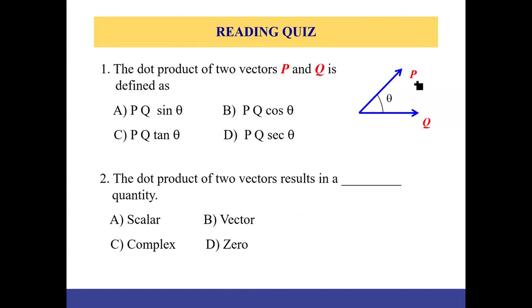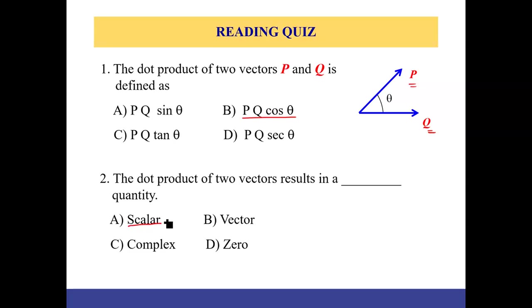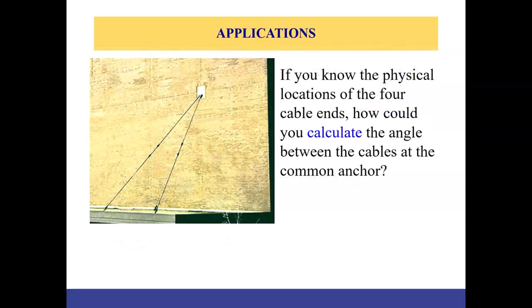The dot product between two vectors P and Q can be written as the magnitude of P multiplied by the magnitude of Q multiplied by cosine theta. This is the equation for the dot product, and the result is always a scalar quantity.